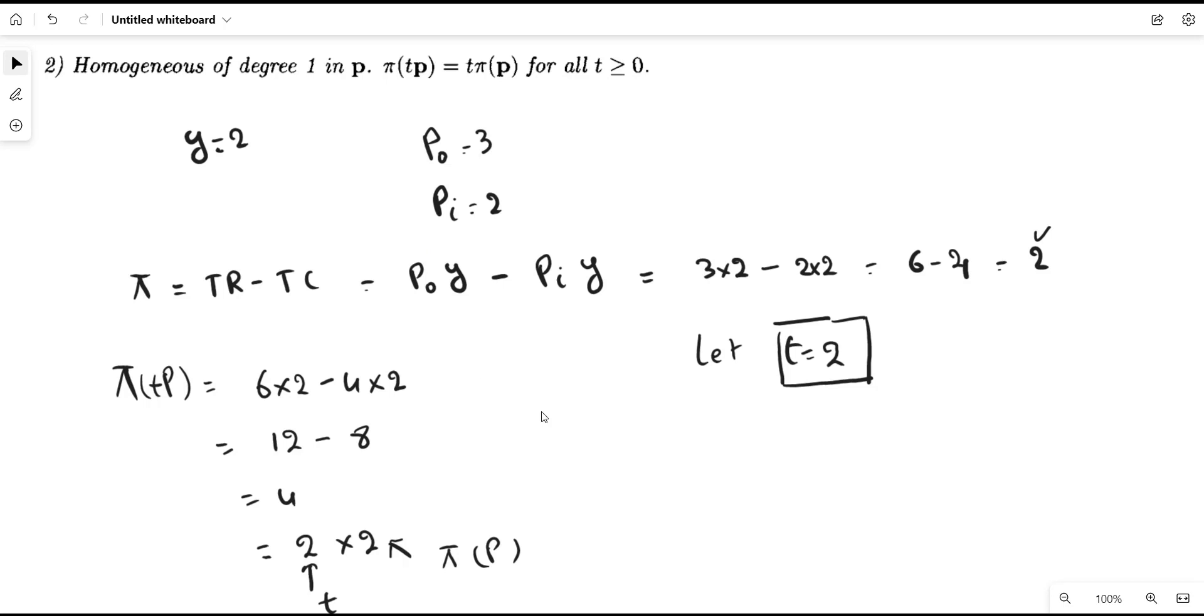So this is the homogeneity of degree 1 of the profit function. Rest of the properties will be discussed in the subsequent videos. Thank you for watching.